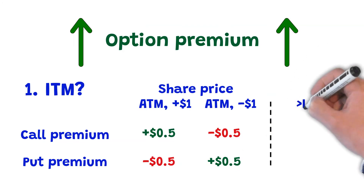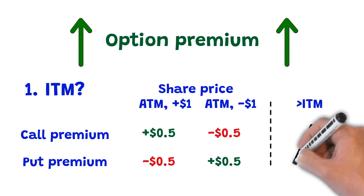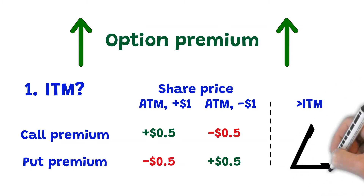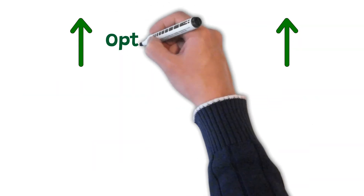The farther we are from at the money, every $1 increase or decrease — ruled by a Greek called Delta — moves away from the 50 cents, getting closer to zero or to one.